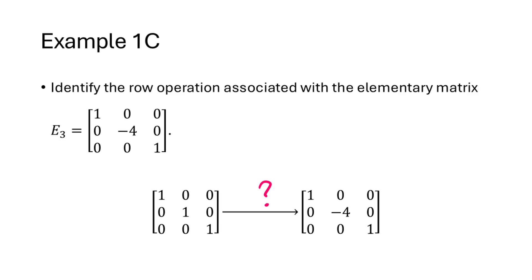One more example: we have an elementary matrix E3. What row operation did we do, starting with the 3 by 3 identity matrix, to get this matrix E3? Thinking about our three options, what we did is we scaled row 2 by a factor of negative 4.